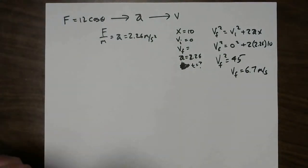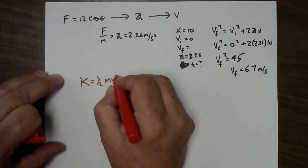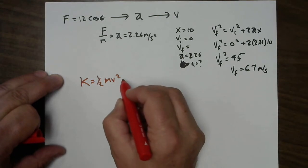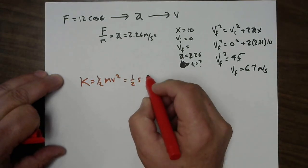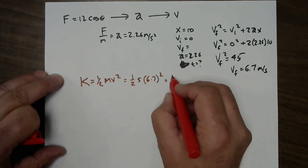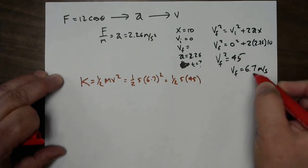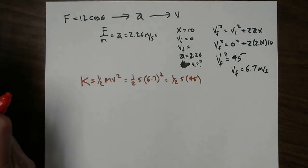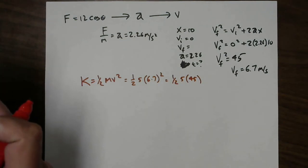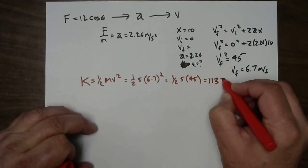I said earlier that the kinetic energy formula was 1 half MV squared. So, 1 half of 5 times 6.7 squared, or 1 half of 5 times 45. After all, we just took a square root over here to get this, and so we'll put this in here. And this rounds up again to 113 joules.